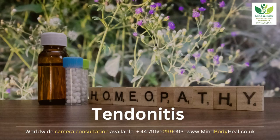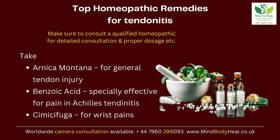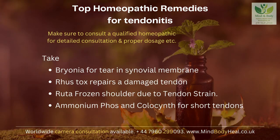Top homeopathic remedies for tendinitis — consult a qualified homeopath for detailed consultation and proper dosage. Remedies include: Arnica Montana for general tendon injury; Benzoic Acid, especially effective for pain in Achilles tendonitis; Cimicifuga for wrist pains; Bryonia for tear in synovial membrane; Rhus Tox to repair a damaged tendon; Ruta for frozen shoulder due to tendon strain; and Ammonium Phos and Colocynthis for short tendons.